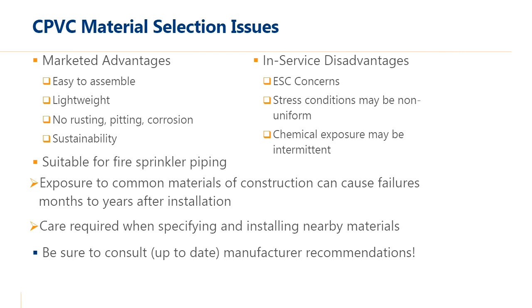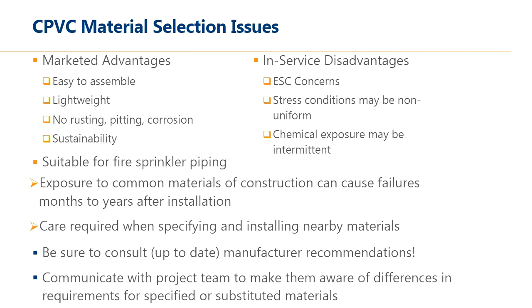The key takeaway is that care is required when specifying and installing nearby materials. It's not that CPVC lacks a proven track record; it's that other things that happen to the pipes after installation can cause issues. You must consult up-to-date manufacturer recommendations — what CPVC manufacturers said 10 years ago about compatible materials will have changed year by year. You also have to communicate with the project team to make them aware of requirements for specified or substituted materials. The pipe installer likely understands the CPVC chemical compatibility issues, but other folks working in the same crowded plenum space might not, and that has to be communicated across the board.